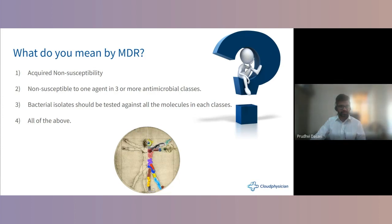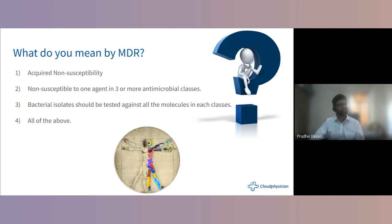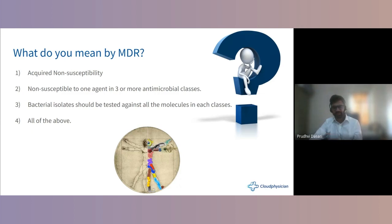What do we mean by multi-drug resistance? This is an MCQ question. Multi-drug resistance means acquired non-susceptibility. Some organisms are intrinsically resistant to certain antibiotics — for example, enterococcus is resistant to cephalosporins, and colistin has resistance to Proteus, Providencia, and Morganella. Acquired non-susceptibility means the organism was susceptible at some point and then became non-susceptible.